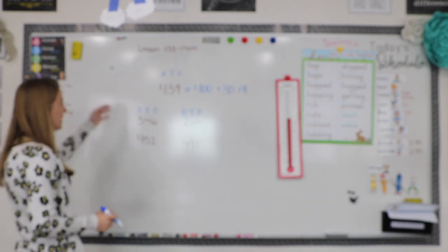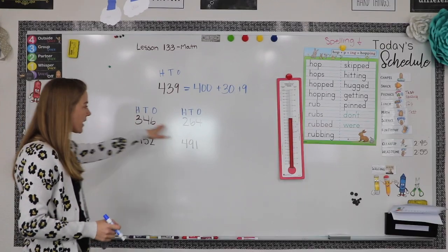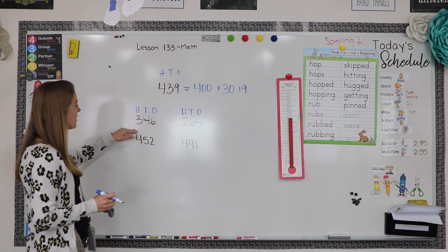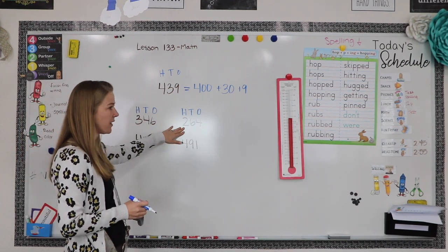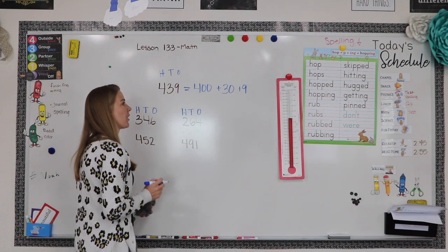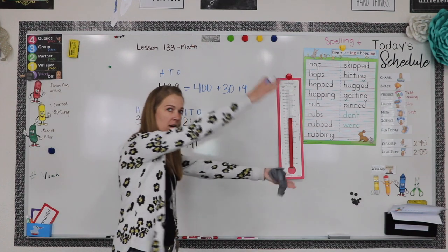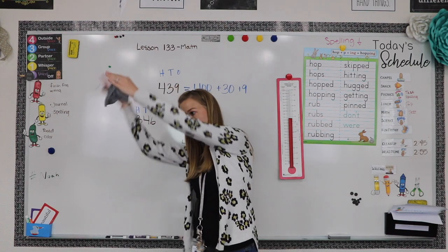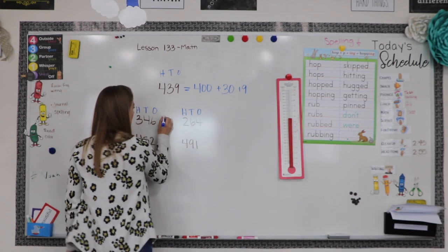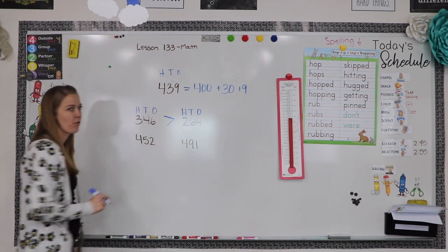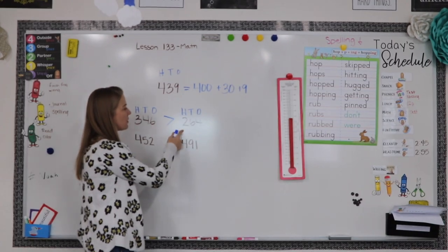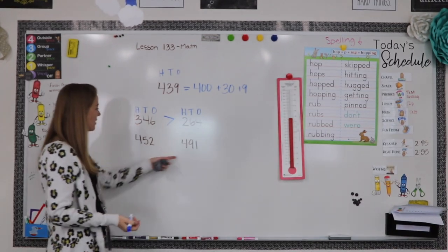Let's compare 346 and 264. Looking in the hundreds place — is three bigger than two? Yes! So that means 346 is going to be bigger than 264. When we do greater than or less than, the alligator wants to eat more food, so he opens his mouth toward the bigger number. 346 is greater than 264.